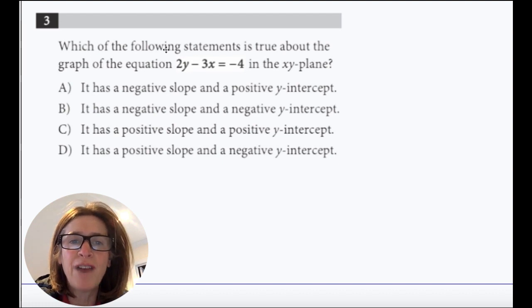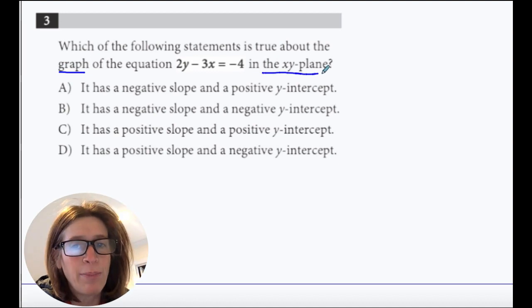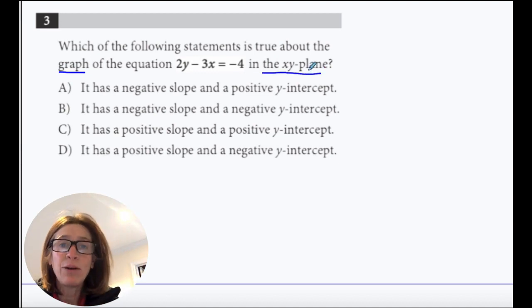Okay, so it says, which of the following statements is true about the graph of the equation 2y minus 3x equals negative 4 in the xy plane? Now, if you've been watching my videos, you know that it's talking about the graph in the xy plane. And I always think that it's helpful to see a quick picture of this.